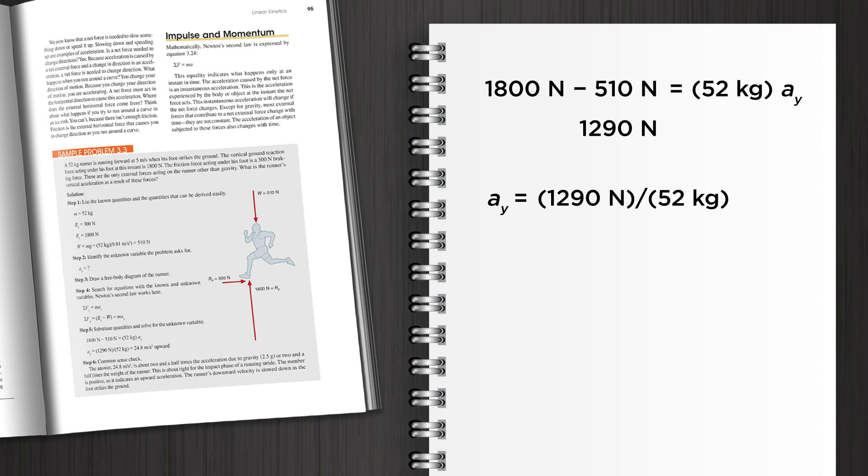By solving the problem, we can determine that the runner's vertical acceleration is 24.8 meters per second squared.